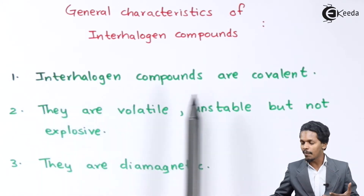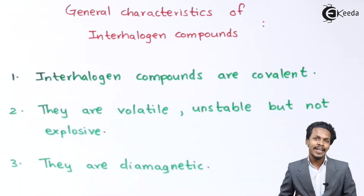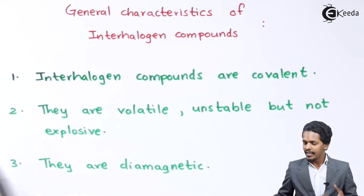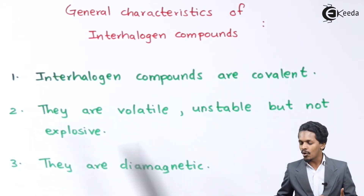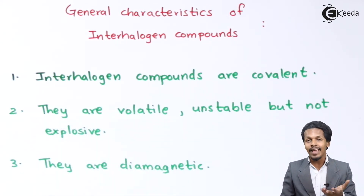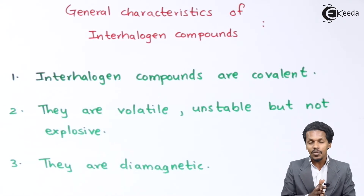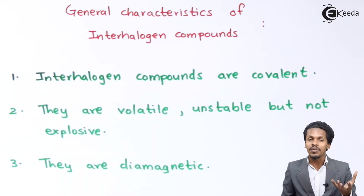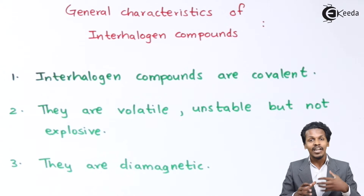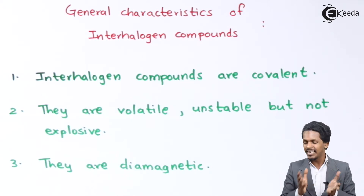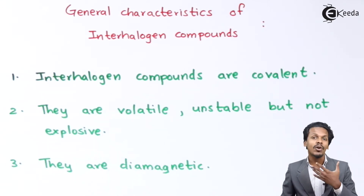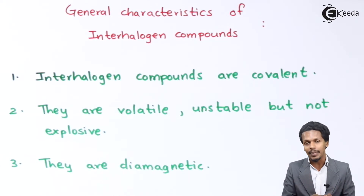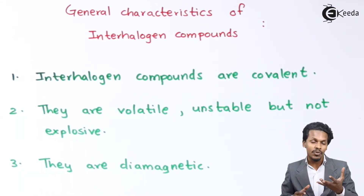Interhalogen compounds are basically covalent in nature. The next characteristic is that they are volatile and unstable, but they are not explosive. For example, in HF, hydrogen is more electropositive while fluorine is the most electronegative, making it very reactive. But interhalogen compounds are not that reactive — even though they are unstable, they are not explosive.